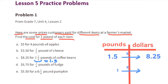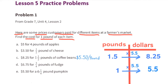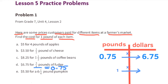Part c: eight dollars and twenty-five cents for one and a half pounds of coffee beans. One and a half pounds divided by one and a half equals one pound. Eight point two five divided by one and a half equals five and a half. So one pound of coffee costs five dollars and fifty cents per pound.